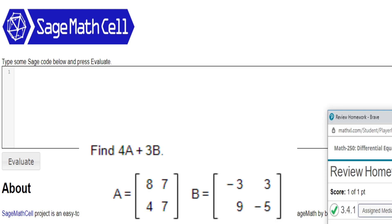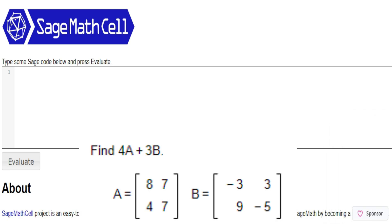This problem calls for two matrices. In order to make a matrix, I'm just going to call them A and B, as in the problem. Type in A equals matrix, then parentheses, and then you're going to have rows, columns, and then in brackets you're going to have all the numbers. So for A, it has two rows and two columns, and then it has 8, 7, 4, 7.